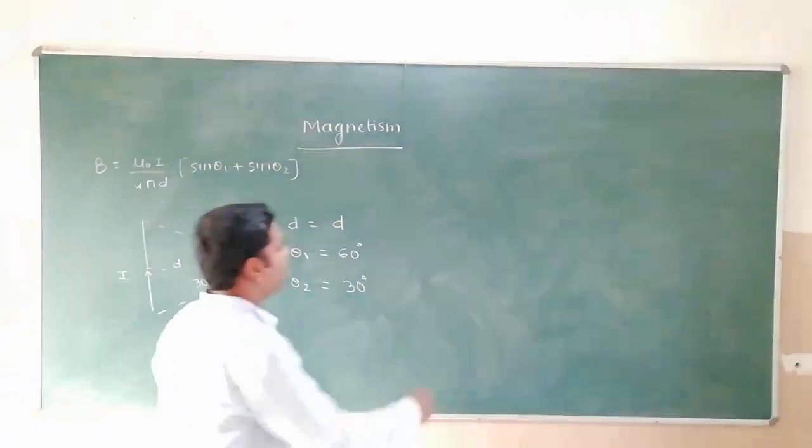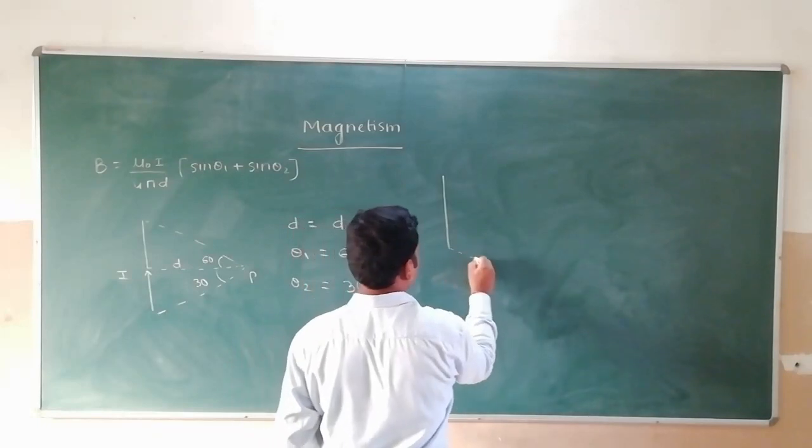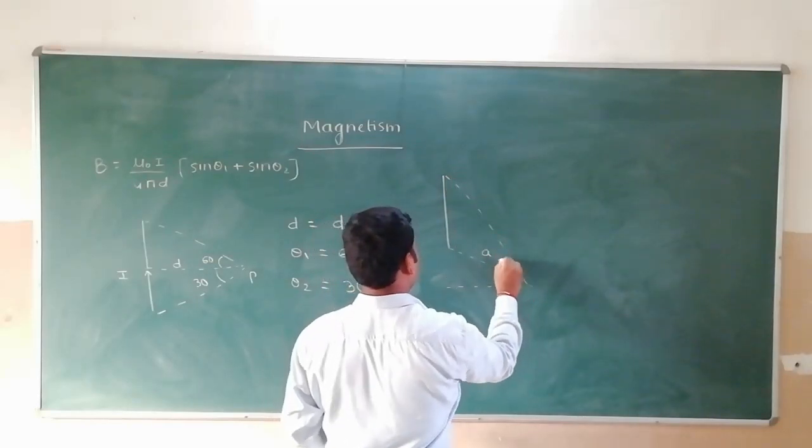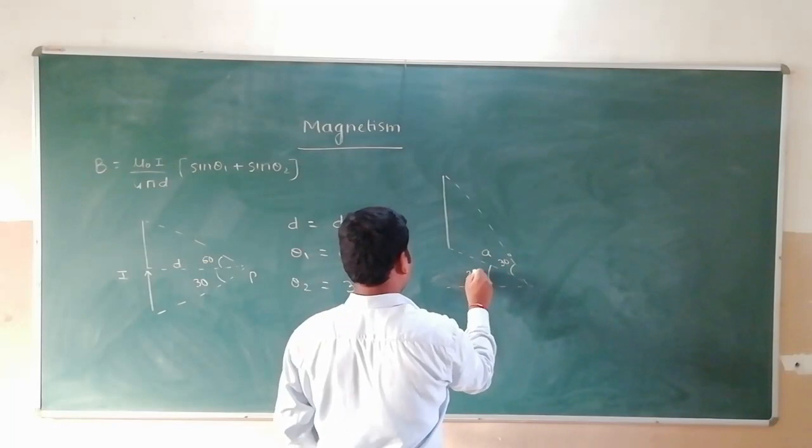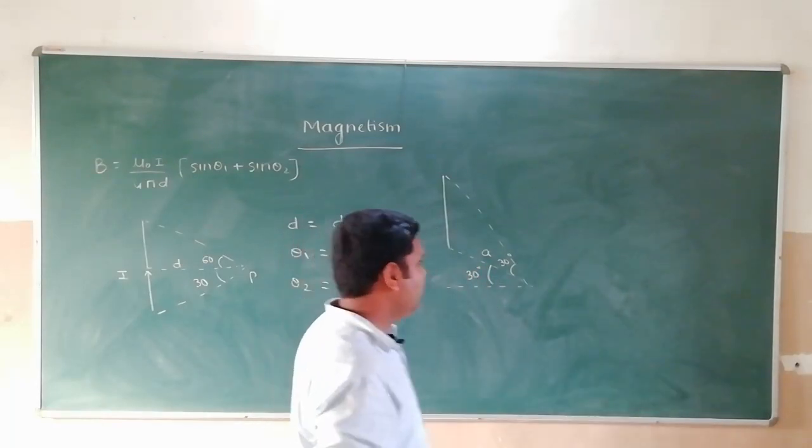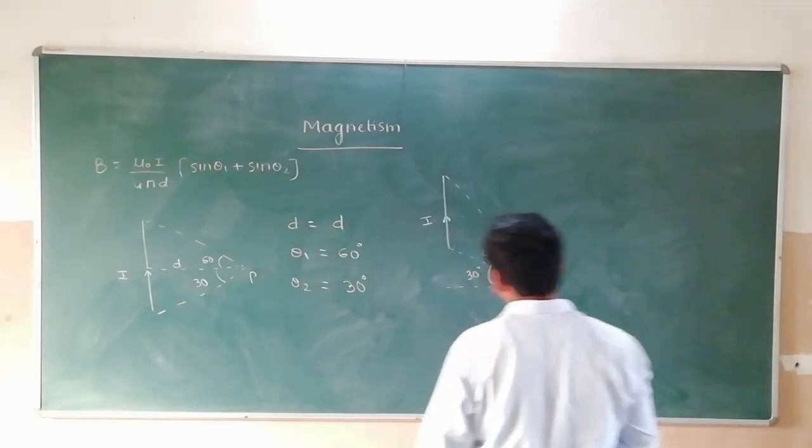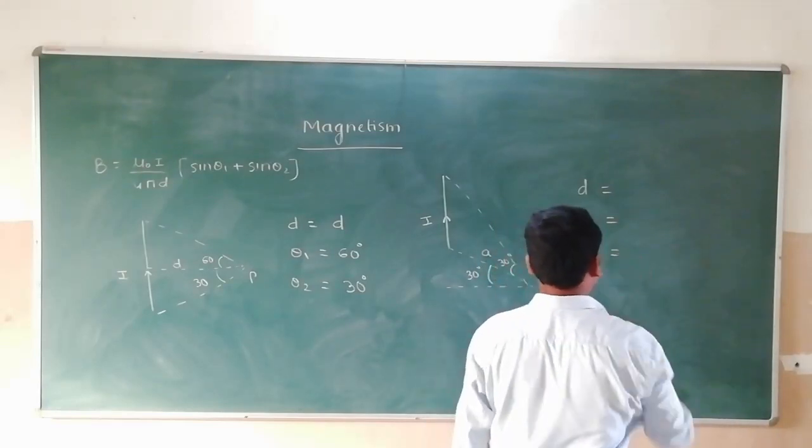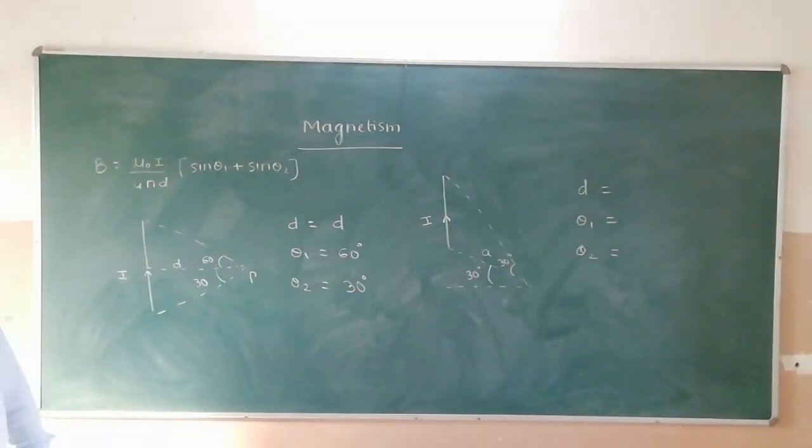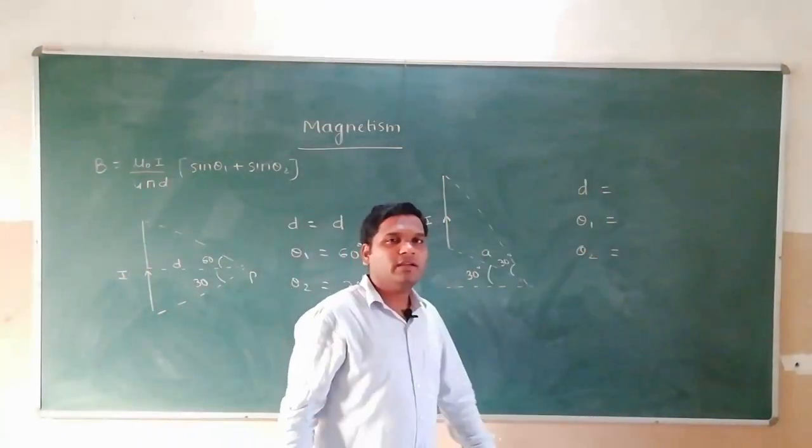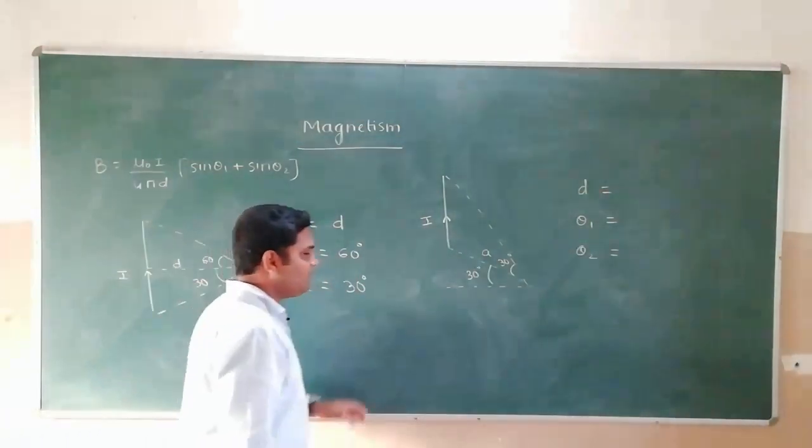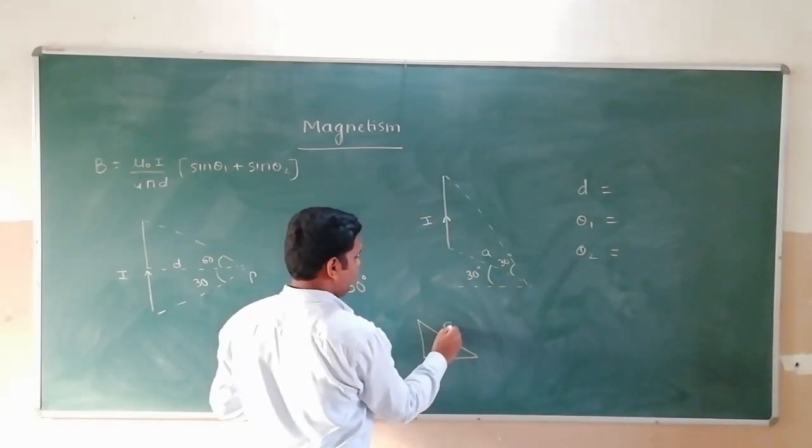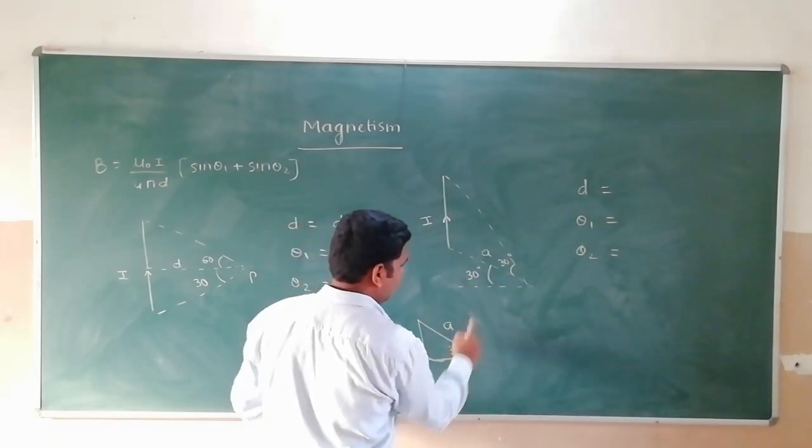Next question: This wire is given as a, this is given 30 degree. Now in this example with this current carrying wire, what is the value of D, what is theta 1 and what is theta 2? D is always the shortest distance. This triangle has a as hypotenuse and 30 degree angle.